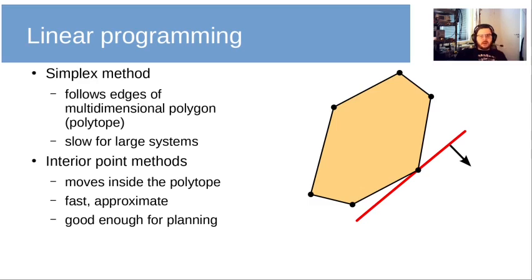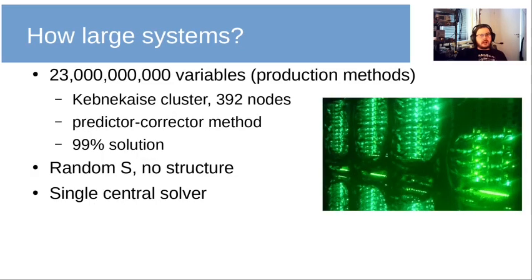How large systems can we solve on actually existing hardware? My estimate is 23 billion variables — that would be 23 billion production methods. This is using part of the local Kebnekaise cluster, using what's called a predictor-corrector method. The main point is this is a 99% solution and we can do it in a reasonable amount of time. I also don't really assume any structure on the S matrix, and this is just using a single central solver.